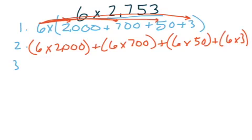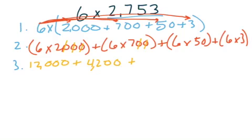Step number three is for me to multiply. I have three zeros here, so I'm going to cross them out. Six times two is twelve, and I add those three zeros back. Plus, cross those two out and I get forty-two, and add those two zeros back in — I have four thousand, two hundred. Plus, cross one zero out and I have thirty, add that zero back in and I get three hundred. Plus eighteen.